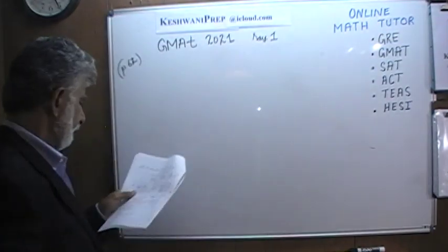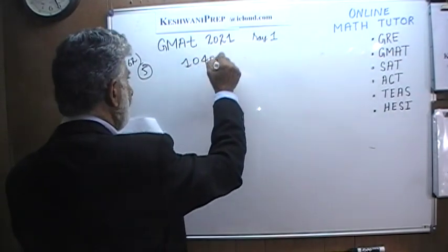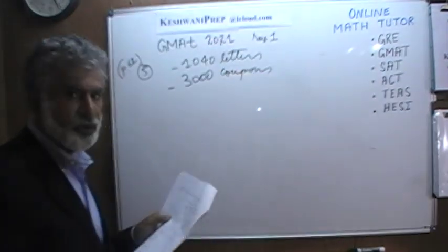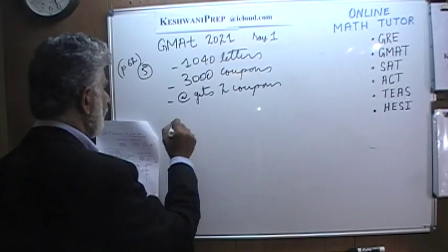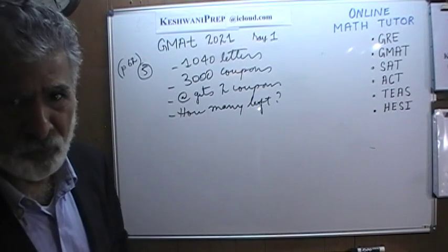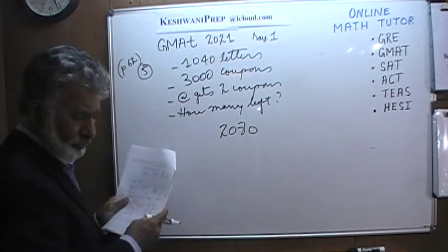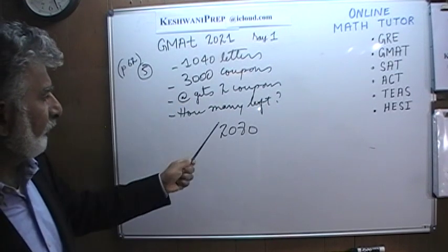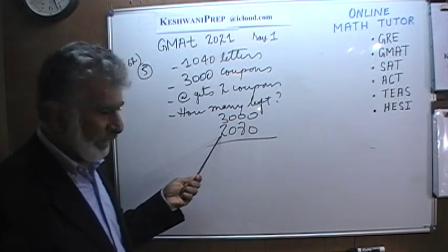Number five: we are mailing 1,040 letters and putting coupons in them. Each letter gets two coupons. We have 3,000 coupons to start. The question is: how many are left over? Two times 1,040 is 2,080. We have 3,000 to begin with, so 3,000 minus 2,080 gives us 920 coupons left over.